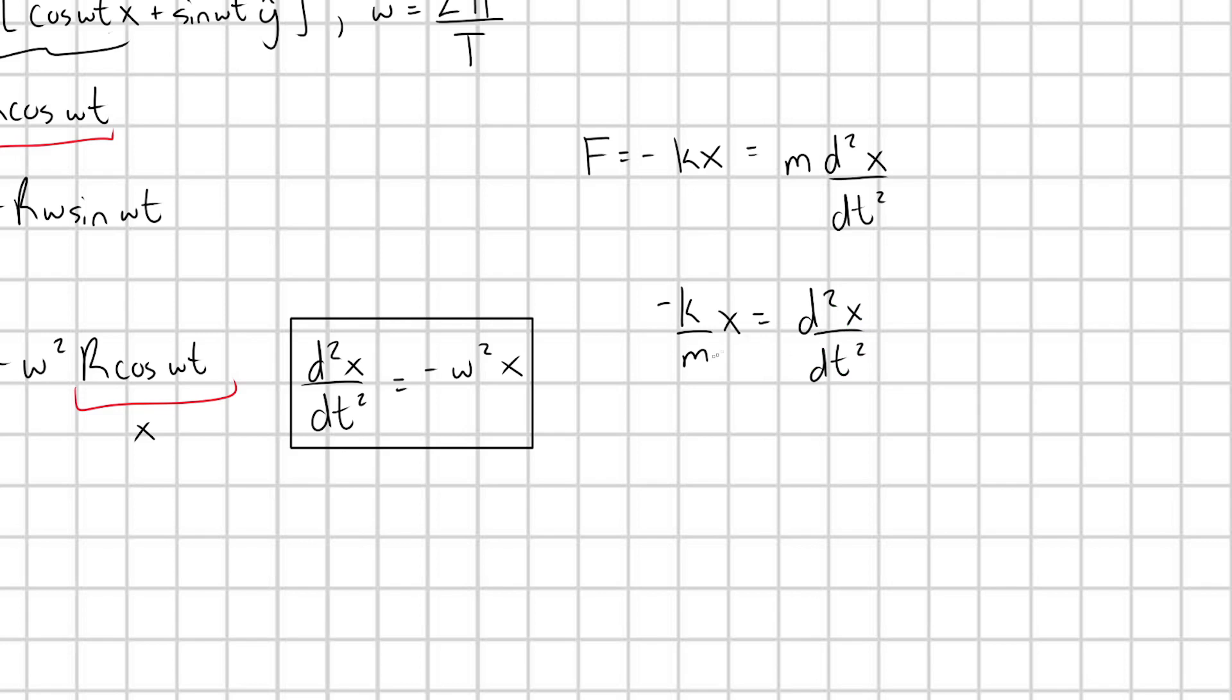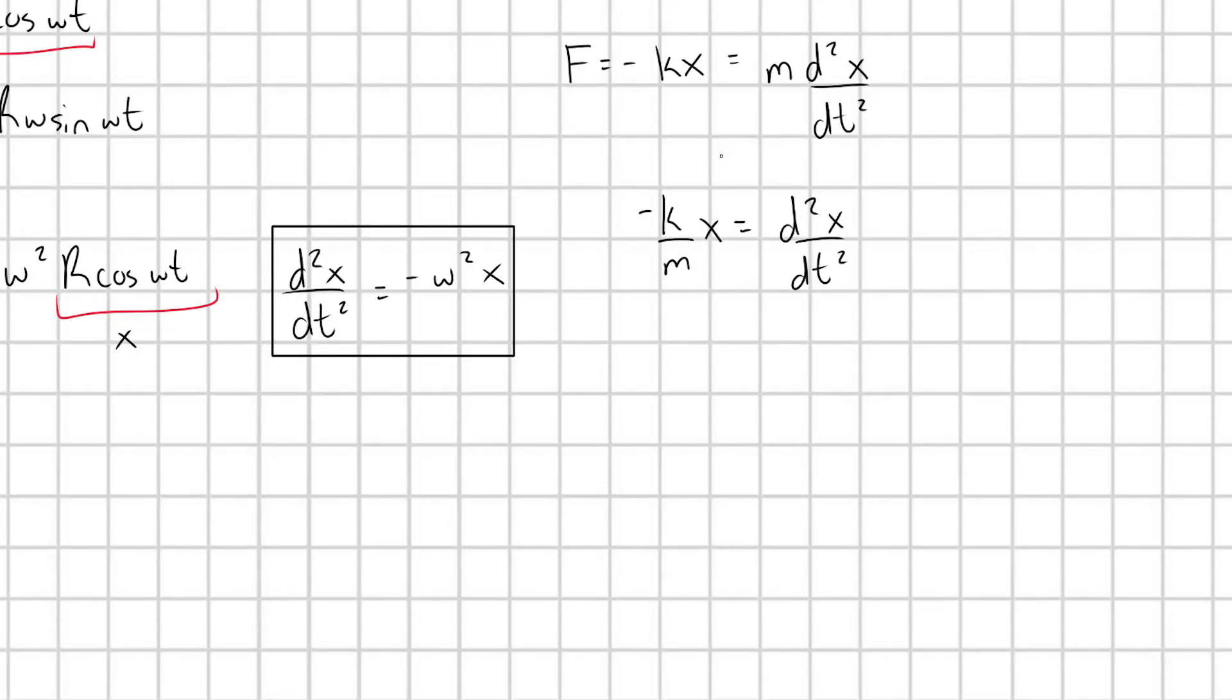And so I can go ahead and divide both sides of this expression by m. And I have d squared x dt squared. But hold on a second, this expression right here is identical to this expression on the left here. So if I define this k over m as omega squared, then I'm going to be left with d squared x dt squared is equal to minus omega squared times x.